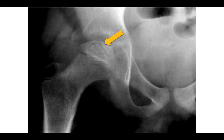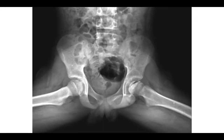This is the subchondral fracture as seen in this AP view of the right hip, and in another case, visible on the left side in the frog-leg view.